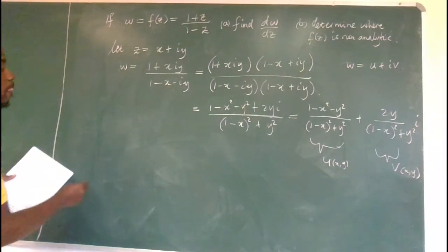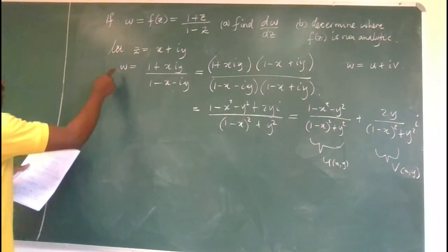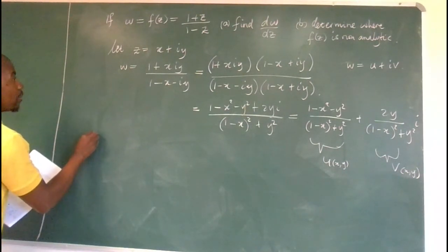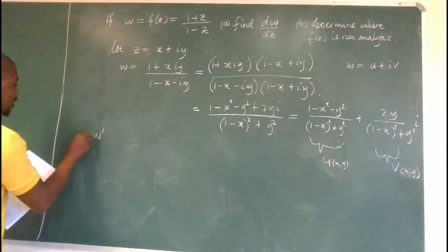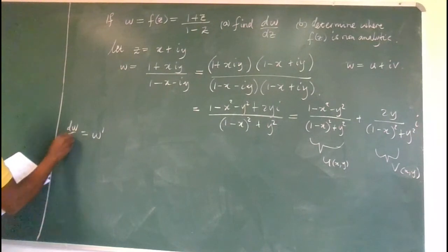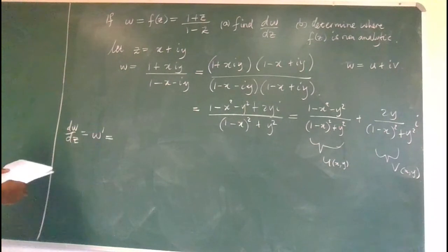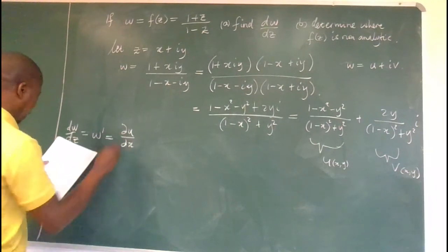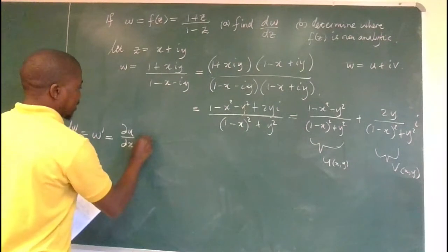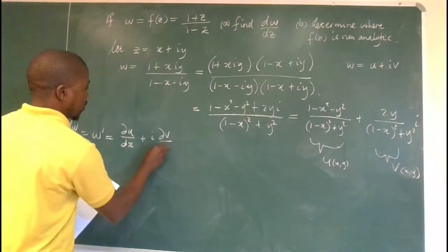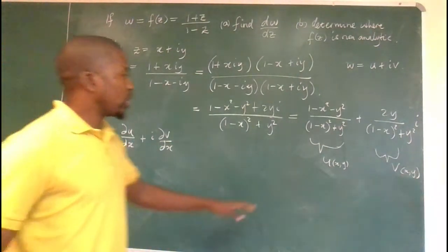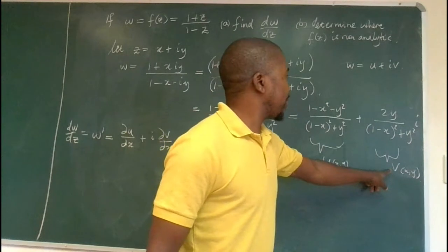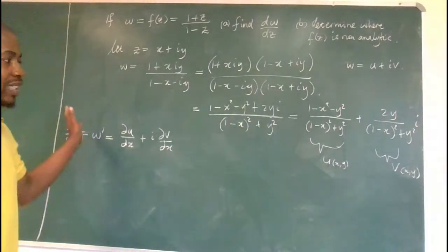By the definition of the derivative of a complex-valued function, w′ = dw/dz is given by ∂u/∂x + i·∂v/∂x. So we need to find the partial derivative of u with respect to x, and the partial derivative of v with respect to x, then plug those into the formula.